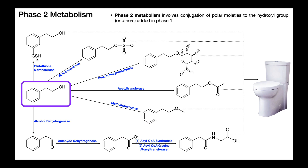Why go to all this trouble to make these drugs more polar? First, chemically modifying them inactivates them. Second, the goal is to eliminate them from the body — we can't just have them building up. The two major routes of elimination are feces and urine. Urine is water-based, so if we want something to dissolve in urine to be eliminated, it has to be polar. Something very hydrophobic, like most drugs are, won't be soluble in the kidney filtrate to make urine, so we have to make the molecule more polar.